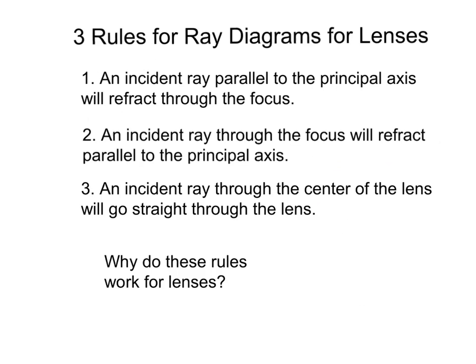Three rules for ray diagrams for lenses. We have these same three rules for ray diagrams for mirrors. They look very similar for lenses, except we have to interpret them a little differently, because light doesn't reflect by a lens, it refracts through a lens. Rule one is an incident ray parallel to the principal axis will refract through the focus. Rule two is an incident ray through the focus will refract parallel to the principal axis. And rule three, an incident ray through the center of the lens just goes straight through the lens.